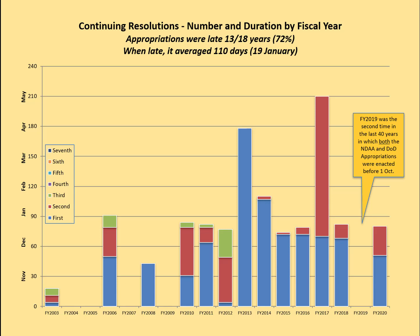In some years, like 2013, there was only one continuing resolution, but it lasted 176 days — almost half of the year. Other years there were two, and sometimes as many as seven continuing resolutions, which can be quite disruptive.